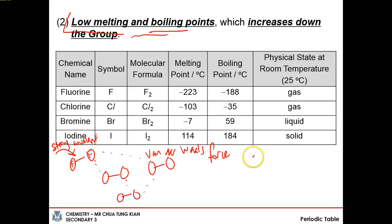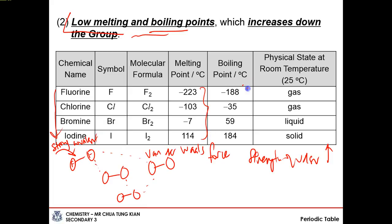The strength of Van der Waals forces increases as the number of electrons increases. As you go down the group, atomic number increases, meaning more electrons in the electrically neutral atom, so the Van der Waals forces between molecules increase. More energy is required to overcome these forces, so melting and boiling points increase going down. This explains the state changes: fluorine is a gas, bromine is a liquid, and iodine is a solid at room temperature.